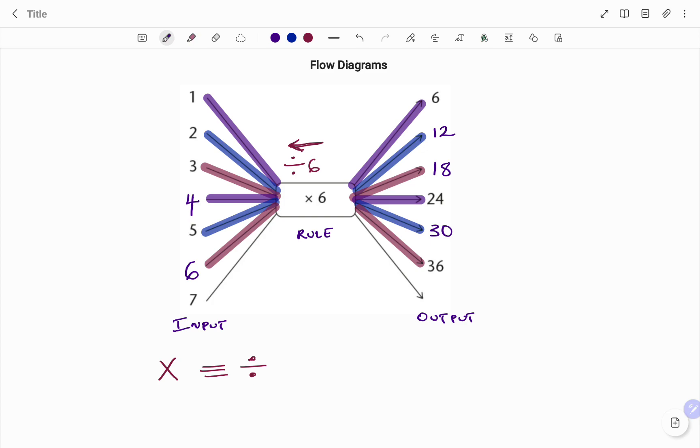Because 36 divided by 6 is 6. And for my last input I have 7 going in as shown, times 6. The output will be 7 times 6, that's 42.